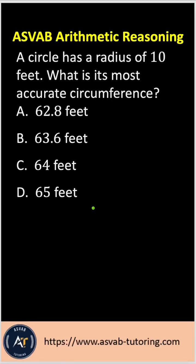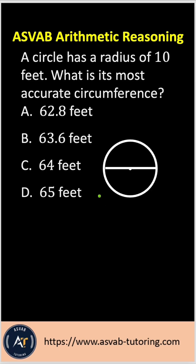Hi everyone, let's practice another arithmetic reasoning question for the ASVAB test. The question says a circle has a radius of 10 feet. What is its most accurate circumference? Anytime you want to find the area and circumference of a circle, make sure that you draw it. That will help you to solve the problem.